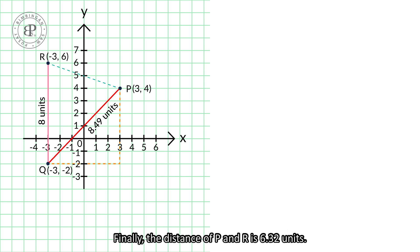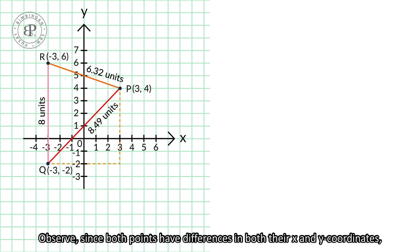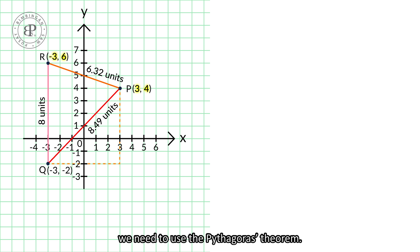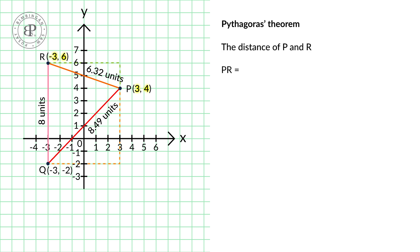Finally, the distance of P and R is 6.32 units. Observe, since both points have differences in both their x and y coordinates, we need to use the Pythagoras theorem.